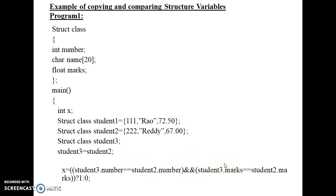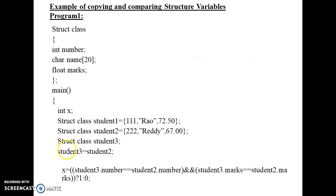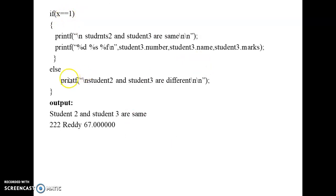We use the logical AND operator, so both expressions must be true. 'Student three dot marks' equals 'student two dot marks' — student two's marks are 67, so this is also true. When both conditions are true, one is assigned to x. Then we check if x equals one — it is true, so the message 'student two and three are same' is printed, along with student three's number, name, and marks: 222, 'ready', and 67. If the condition were false, the else message would print instead.